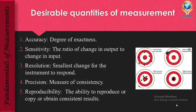The last definition is reproducibility — the ability to reproduce, copy, or obtain consistent values. Precision and reproducibility are again more or less the same. When I conduct the experiment again and I am able to reproduce or get a consistent result, then I call it reproducibility.